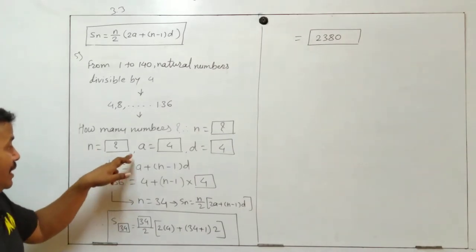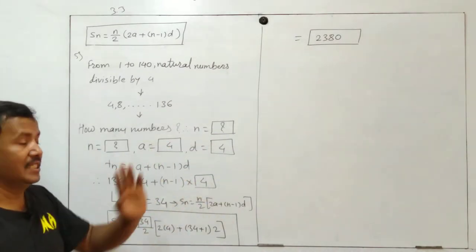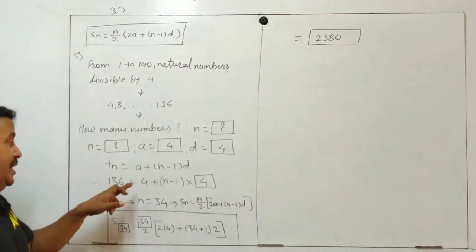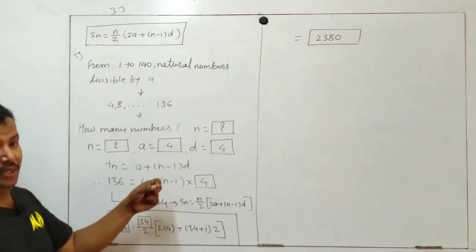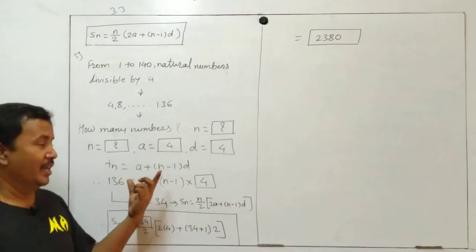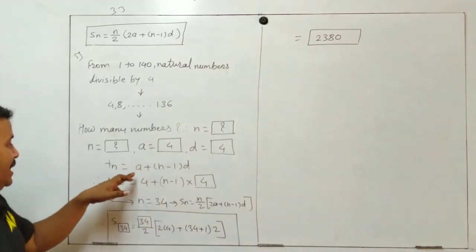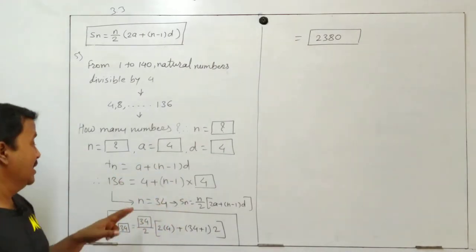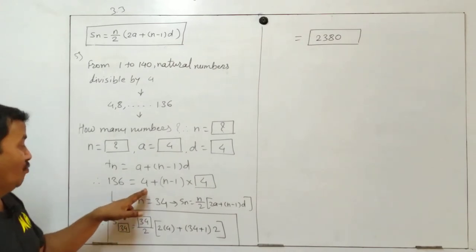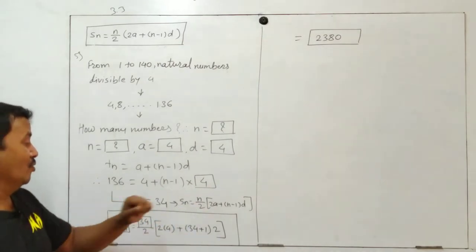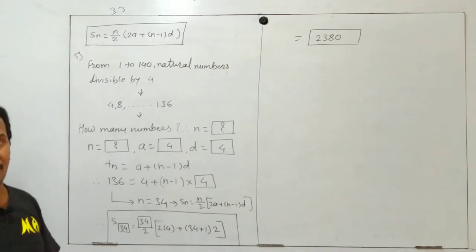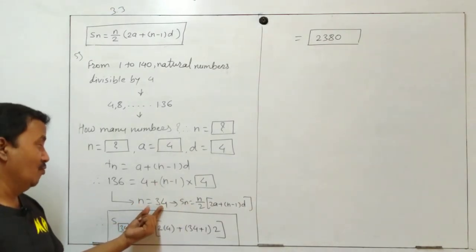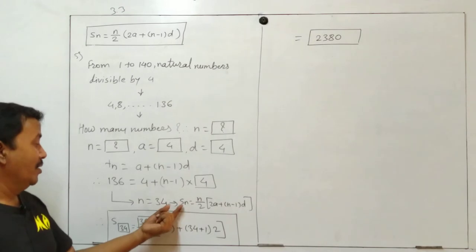So n is equal to question mark, a is equal to four, and d is equal to four. tn is equal to a plus n minus one into d. So one thirty six is equal to four plus n minus one into four. After this calculation we get n is equal to thirty four.